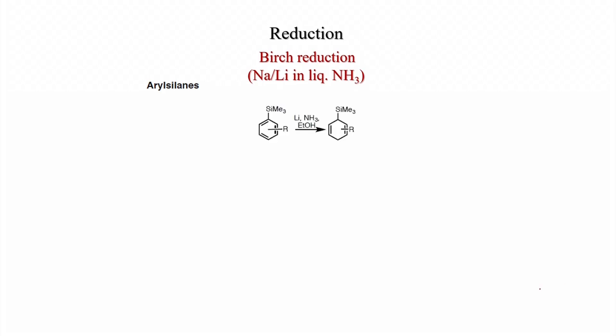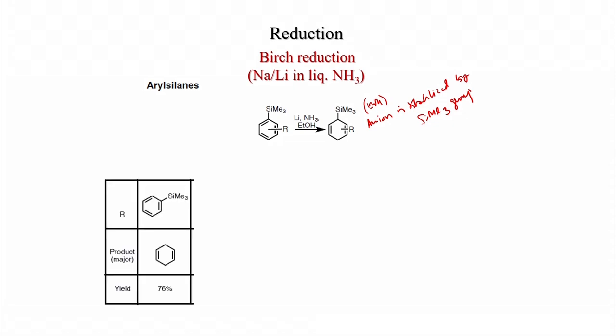Arylsilanes also react under these conditions. Lithium in liquid ammonia and ethanol reduces them to the cyclohexadiene system; the SiMe3 group acts as an electron-withdrawing group, so the anion is stabilized by SiMe3. Phenyl trimethylsilane treated with sodium or lithium in liquid ammonia and ethanol gives 76% yield of the cyclohexadiene.